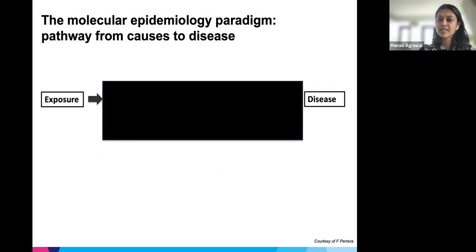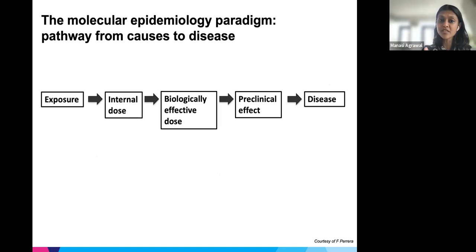In all the studies we do to understand risk factors, we look at exposures and then at disease. What happens between the exposure and the disease for the most part remains a big black box in traditional epidemiology. A new paradigm — the molecular epi paradigm — is being introduced to understand the different aspects of what happens between exposure and disease, applicable to all chronic diseases.